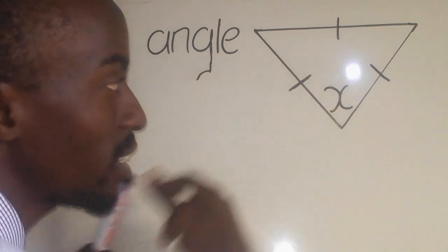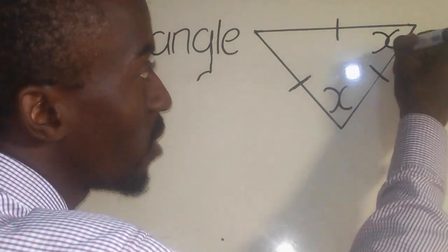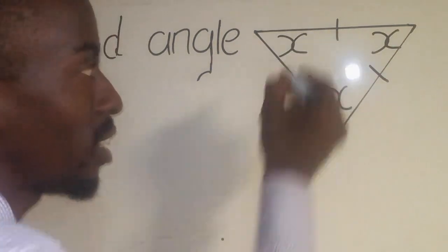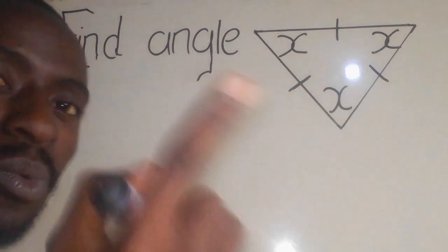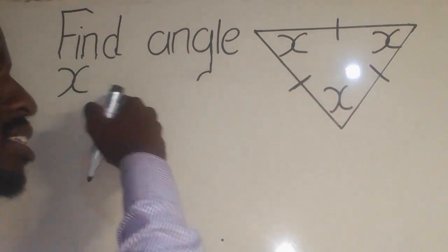This simply means if here I have x, even there I have x, even here I have x. That's the actual meaning. But the question is saying find the angle x.